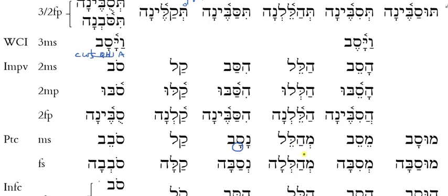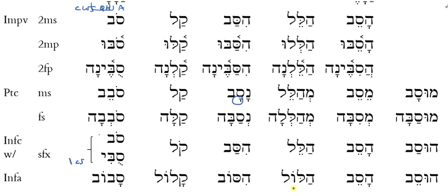The participle: mhalel and mhalelah — typical patterns. The infinitive construct and absolute are also quite normal: halel for the construct and halol for the absolute. All three verbal roots are here in all the forms. We don't see any simplifying of those into monosyllabic cores, so the Piel is very normal.